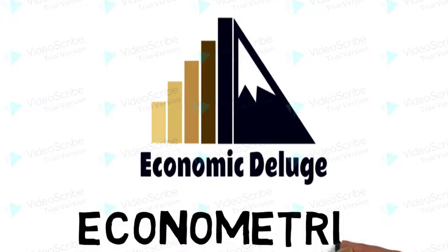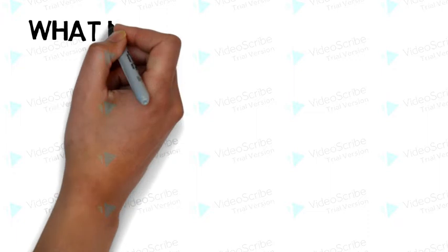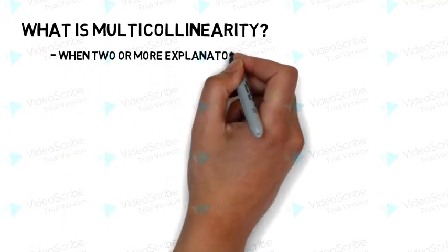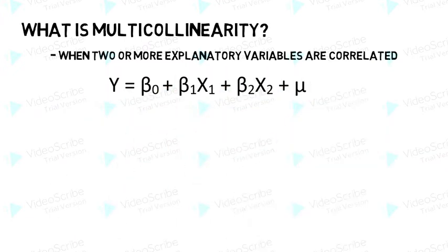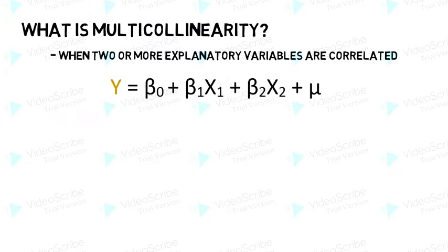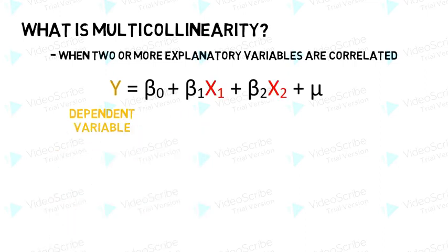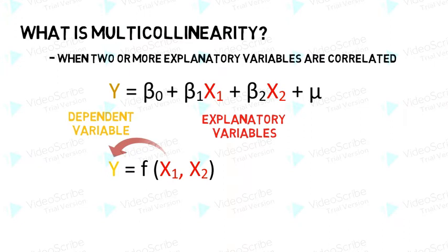In today's video we are going to learn about multicollinearity. Multicollinearity occurs when there is a relationship between two or more explanatory variables — that is, when two or more explanatory variables are correlated. Look at this regression equation: y is equal to beta naught plus beta 1 x1 plus beta 2 x2 plus mu. Here y is the dependent variable and x1 and x2 are the independent or explanatory variables. In the regression model we estimate the effect of x1 on y and x2 on y. Now if there is any relationship between x1 and x2, or if x1 and x2 are correlated, then there is multicollinearity.